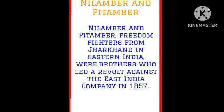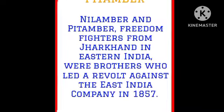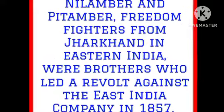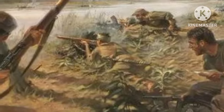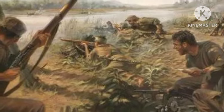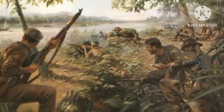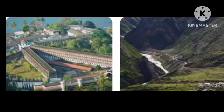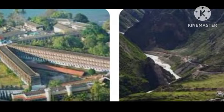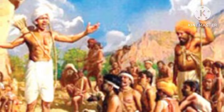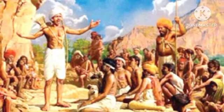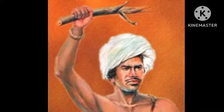Two brothers of the Bhokta clan of Khawar tribe, Nilambar and Pitambar, were valiant and experts in guerrilla warfare during 1857. Avoiding direct confrontation, both brothers resorted to guerrilla war and killed many British soldiers. On being caught, the British sent one of the brothers, Pitambar, to Kalapani, while the other, Nilambar, was hanged in March 1859.